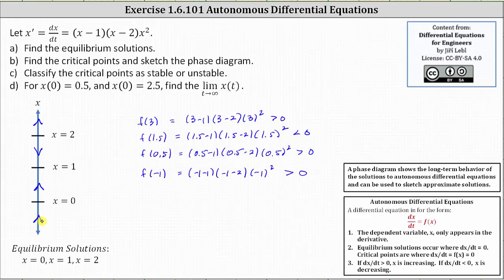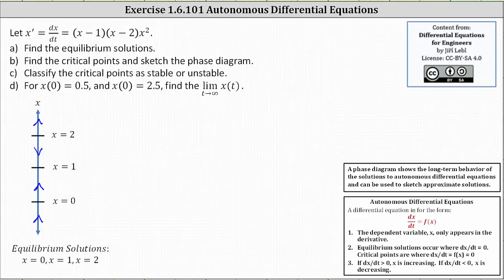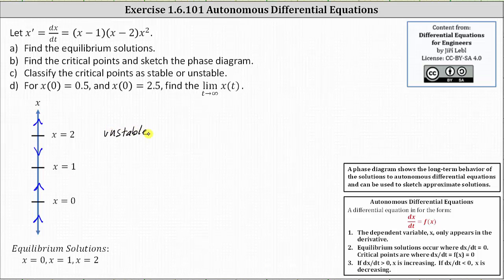This is the completed phase diagram. Now let's classify the critical points at x equals two, one, and zero as stable or unstable. In order for it to be stable, the arrows above and below must both point toward the critical point. If they don't, it's unstable. At x equals two, both arrows point away from the critical point, and therefore the critical point at x equals two is unstable. Both arrows point toward the critical point at x equals one, so the critical point is stable. At x equals zero, only one arrow points toward the critical point, and therefore it's unstable.